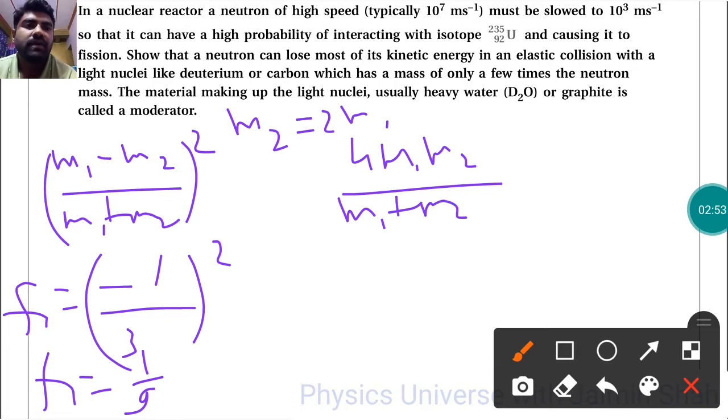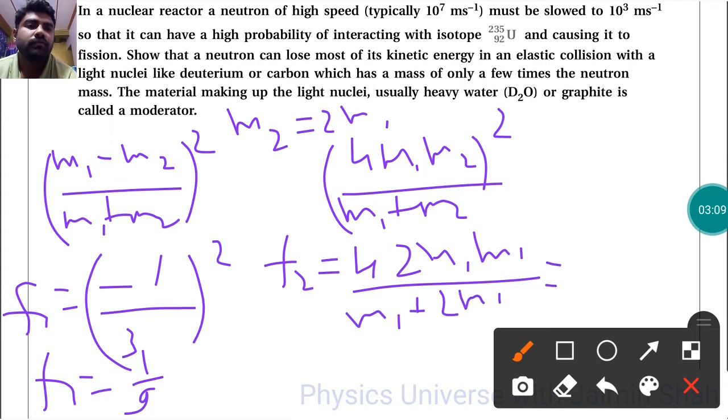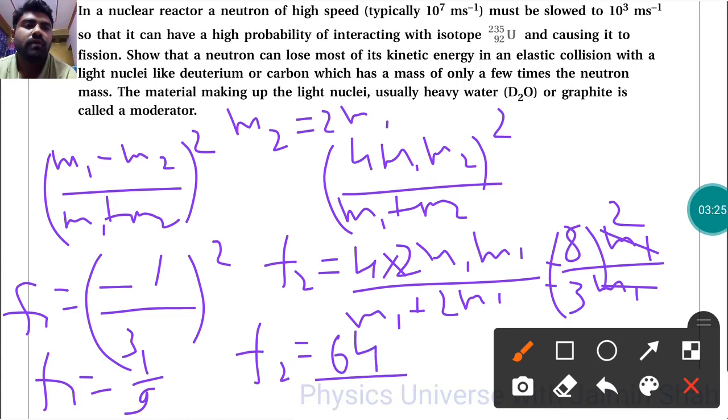For f₂, putting m₂ = 2m₁: f₂ = [4m₁(2m₁)/(m₁ + 2m₁)²] = [8m₁²/(3m₁)²]. After canceling m₁, we get f₂ = 64/9.